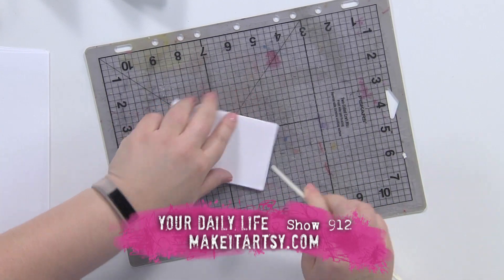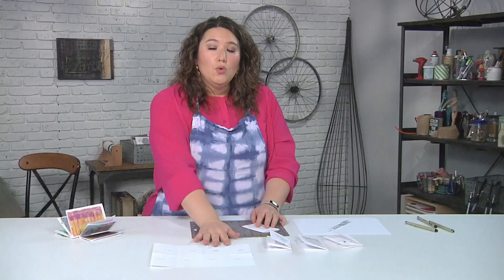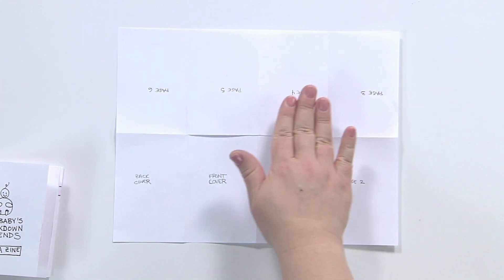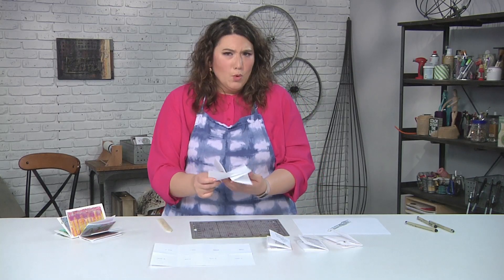Now, I have drawn a little handy-dandy guide for you here to show you when you are designing your zine exactly how it works. You can see the back cover, the front cover, page one, page two, page three, page four, page five, and page six. So that means that when you unfold your book to work on it, you can work in it folded, but I find it a lot easier to work in it unfolded.